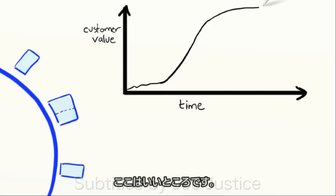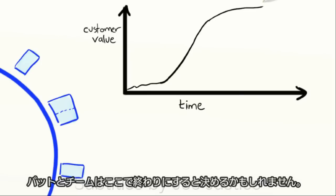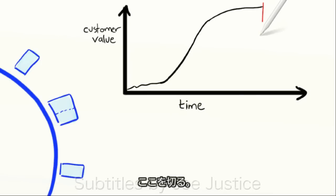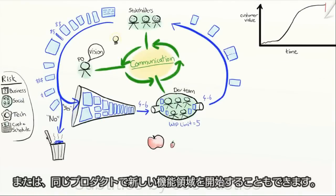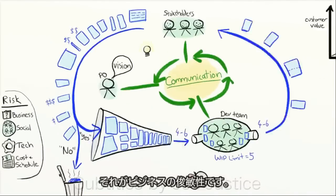This is a nice place to be because at any point, Pat and the team may decide to trim the tail, to cut right here and move on to another more important project, or maybe start on a whole new feature area within the same product. That is business agility.